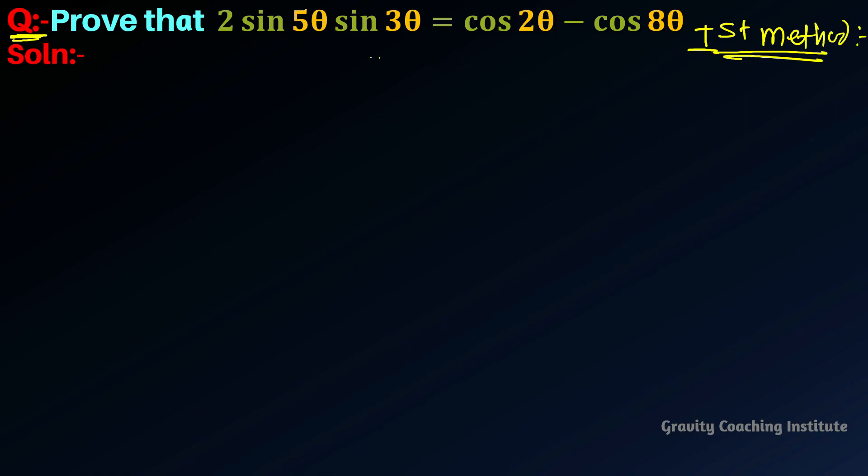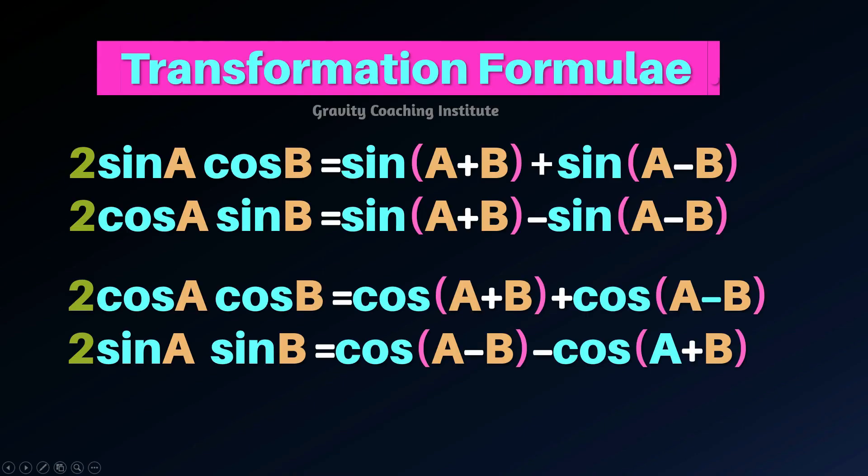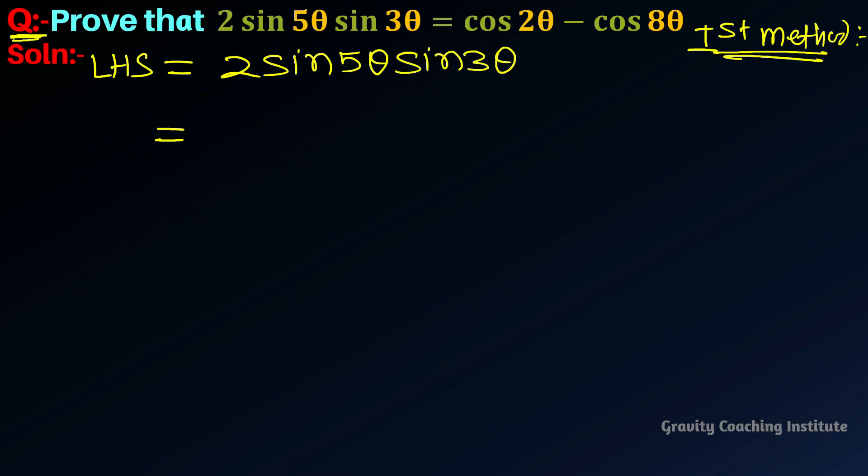In this, we'll prove from left-hand side to right-hand side. Here, LHS = 2 sin 5θ sin 3θ. In this, we'll directly use this transformation formula: 2 sin A sin B = cos(A-B) - cos(A+B). So using this formula...